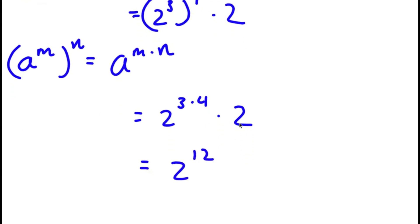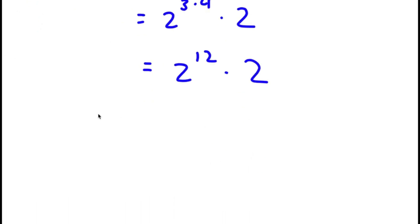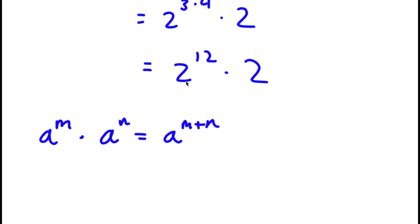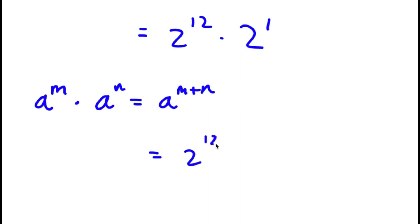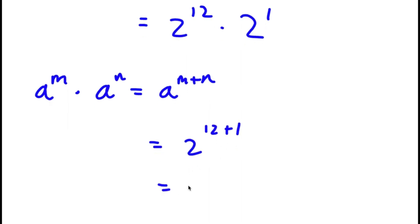So I have 2 to the power of 12 times 2. Now, using the rule a to the power of m times a to the power of n equals a to the power of m plus n, and since 2 is the same thing as 2 to the power of 1, I have 2 to the power of 12 times 2 to the power of 1, which equals 2 to the power of 12 plus 1, which is 2 to the power of 13. So this is my answer.